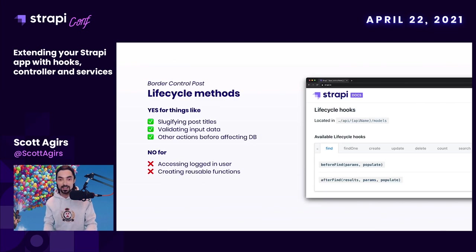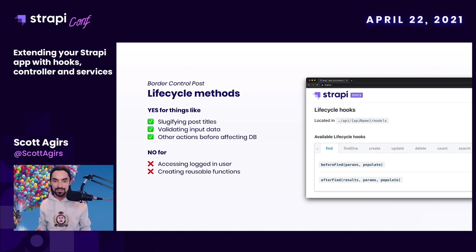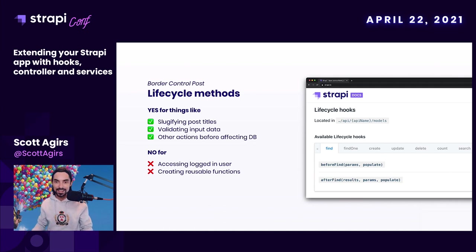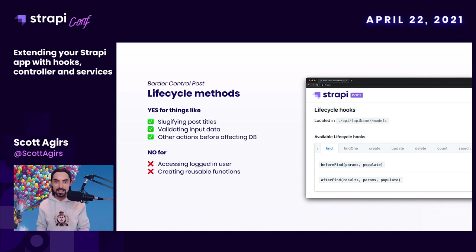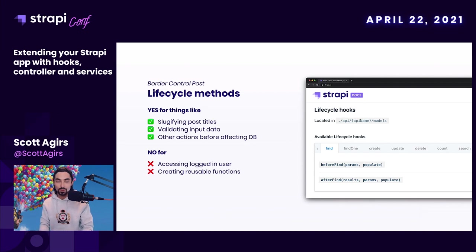First on the list is the lifecycle methods concept. I like to think of this as the border control post — if we think about the database as the country and data as the traveler who tries to enter that country, then border control makes a lot of sense. Lifecycle methods is where we can validate this data and decide whether we want to let the traveler into the country, or database, or not. A perfect use case is to slugify post titles — for example, if you are creating a post on the front end with a title and body, you can use a package like slugify to generate the slug and add it to the post data before it's saved to the database.